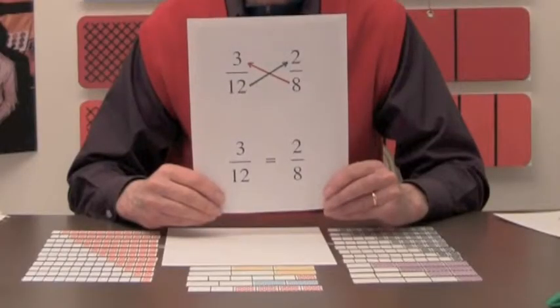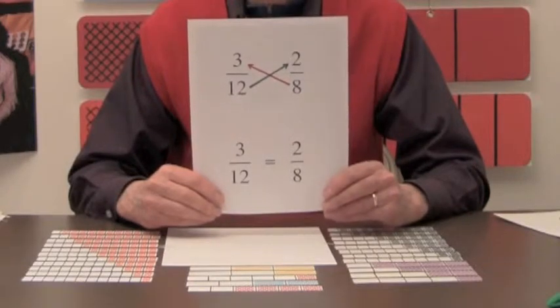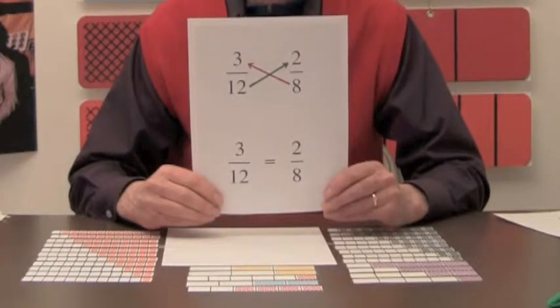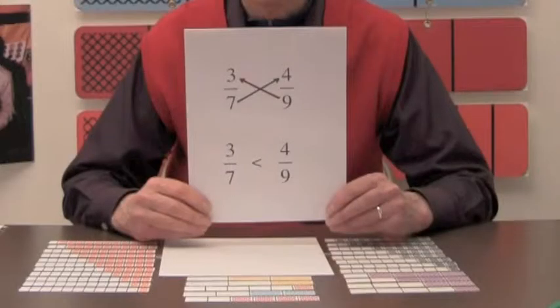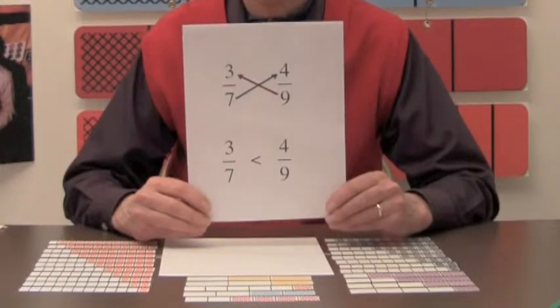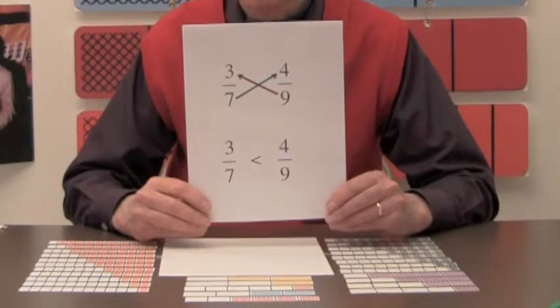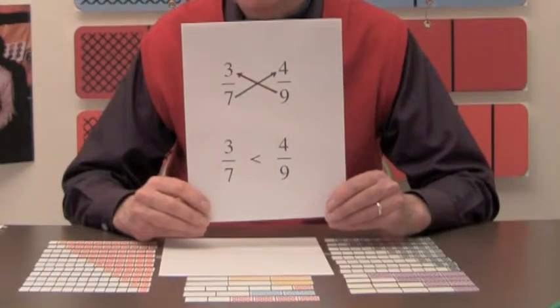In video number 5 in this sequence of 22 videos, we used examples to develop the cross multiplication rule for determining if two given fractions are equal, and we used common denominators to show why this rule works. The products of denominators times opposite numerators are equal. In this example 12 times 2 equals 8 times 3. Similarly in this video, we used common denominators to show why the cross multiplication rule can be used to determine an inequality for two fractions. In this case the products of denominators times opposite numerators are not equal. Here we see that 7 times 4 is not equal to 9 times 3. These two rules are very convenient. Students can discover them from patterns and the rules can be explained by using common denominators.